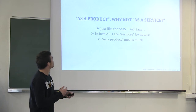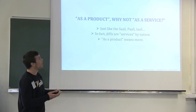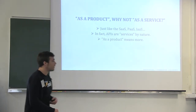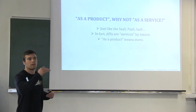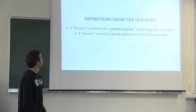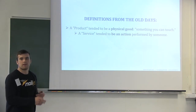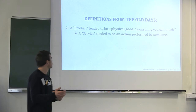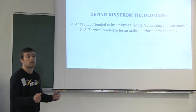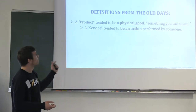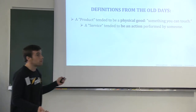It's a historical difference, because we are just using terms such as SaaS and PaaS. So why not say API as a service? The thing is that APIs are a service by nature, so a product is something more — something deeper than this. Traditionally, a product was a physical good, something you can touch and take in your hand, while a service was an action performed by someone.